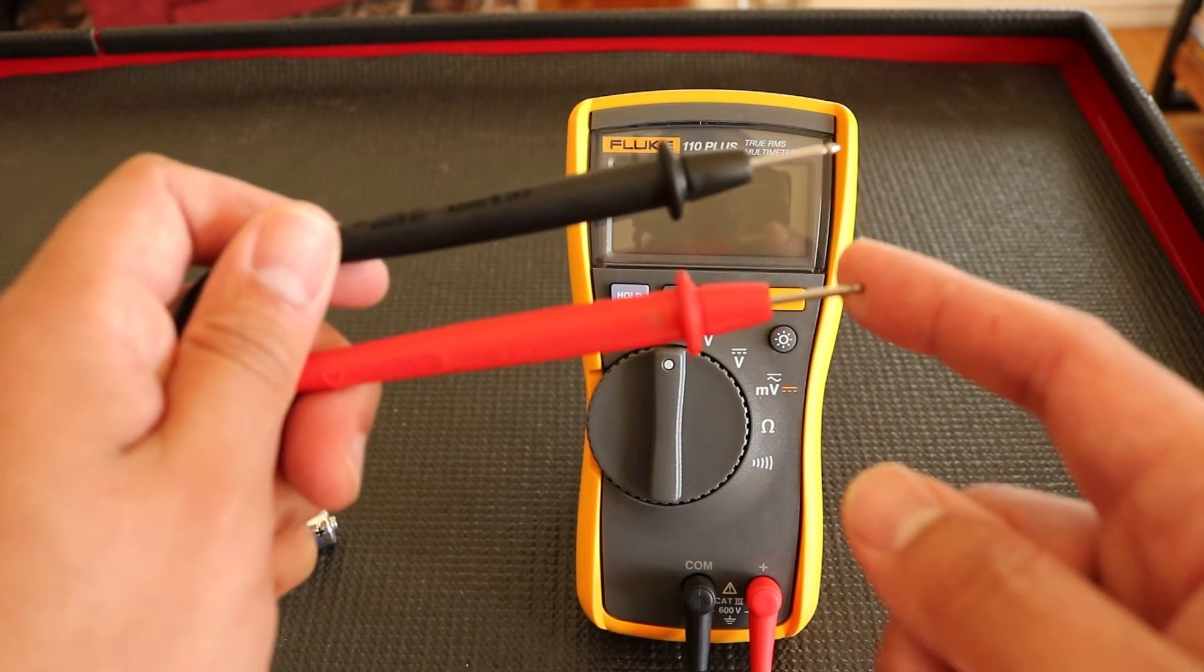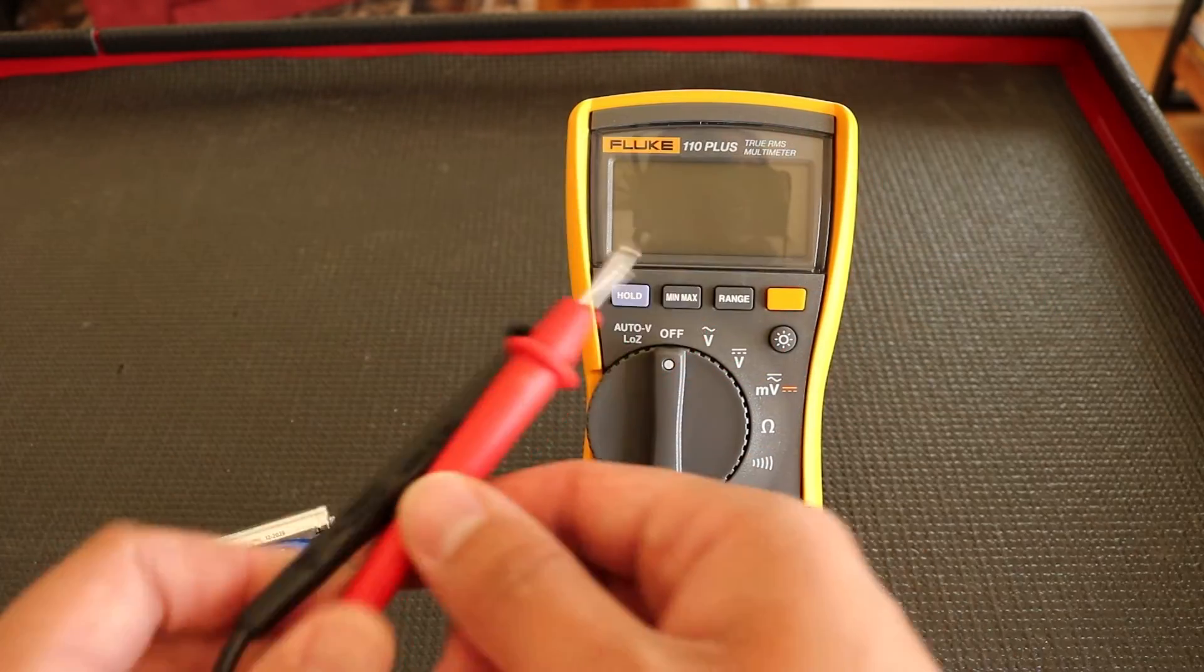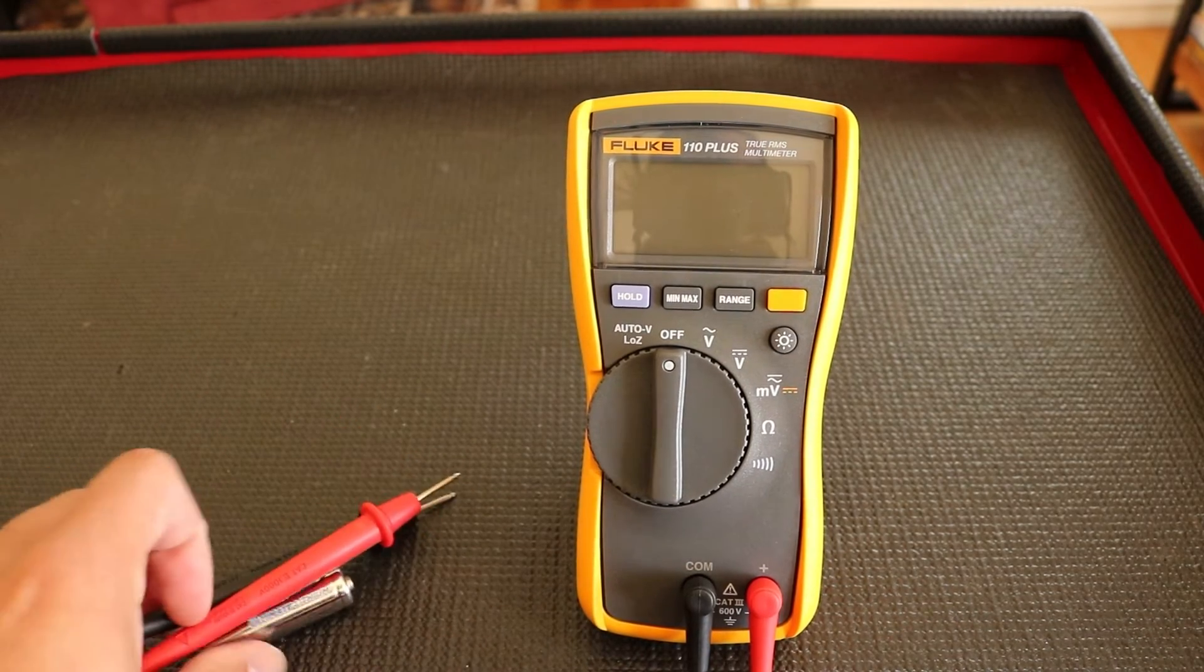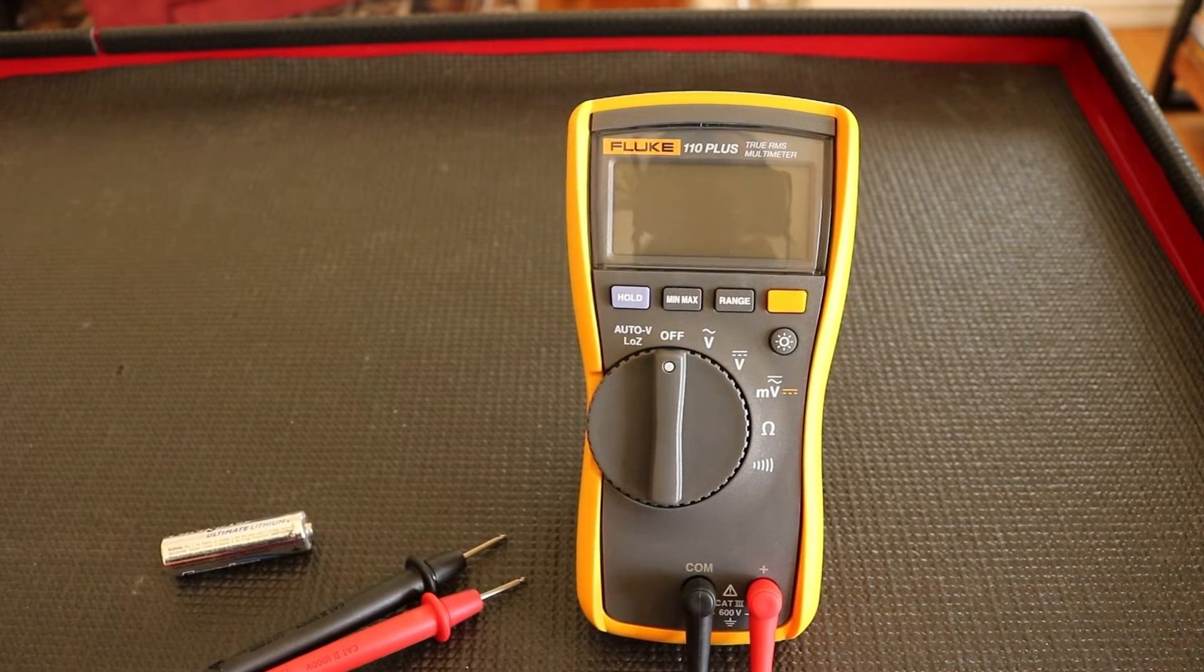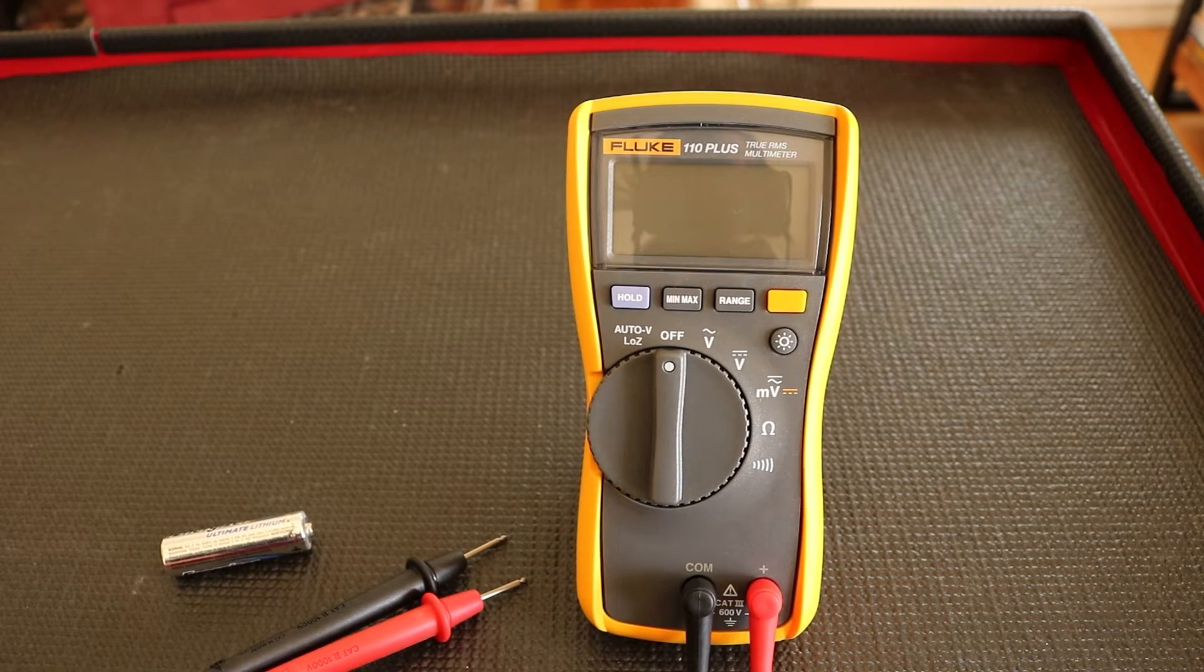And the red one's going to be the V wire. But essentially this is positive and this is negative. Now at this point, we're going to fire up the multimeter and look at the settings and operations.